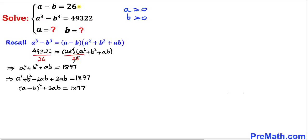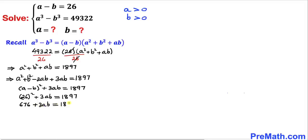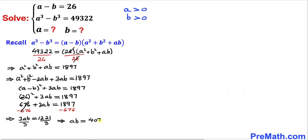So the left hand side becomes a minus b whole square plus 3ab, equal to 1897. We know a minus b equals 26, so replacing it: 26 squared plus 3ab equals 1897. Since 26 squared is 676, we get 676 plus 3ab equals 1897. Subtracting 676 from both sides gives 3ab equals 1221. Dividing both sides by 3, our ab value turns out to be 407.